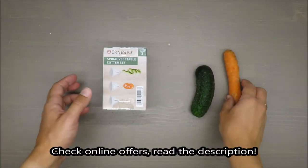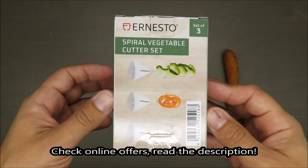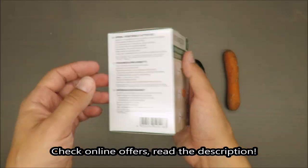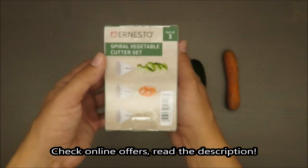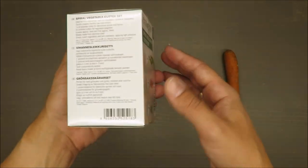Hello everybody, this is Out of the Box Unboxing, and in today's episode I'm going to review for you Ernesto's spiral vegetable cutter set. I'm doing it for my curiosity only, so without further ado, let's get started.